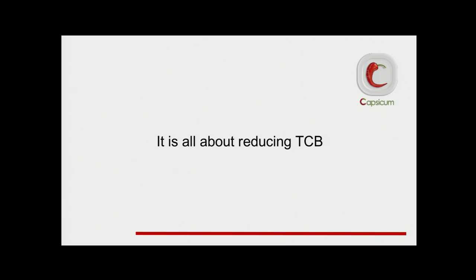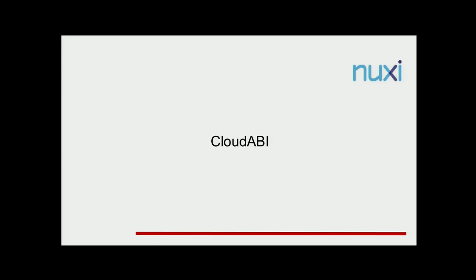In Capsicum, all you are trying to do is minimize the part of the TCB that you need to review in a security-conscious way — you need to be sure that this part is quite secure. This is what we are trying to accomplish. Now I will tell you a little bit about Cloud ABI, which is a kind of new thing — I believe it has about two years. Cloud ABI is designed for the cloud, as its name suggests.